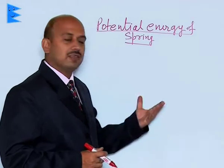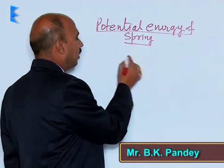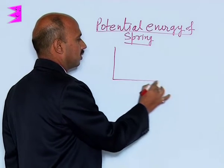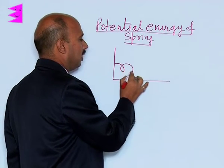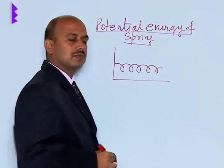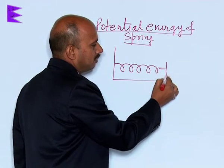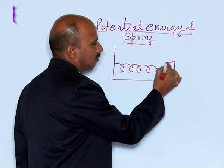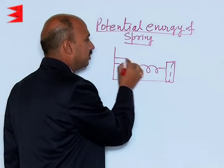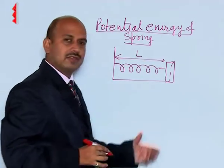Potential energy of spring. In this case, suppose you have taken a spring — this is actually an example of a helical spring. If you attach a mass here and the spring is placed at this point, it has got its natural length and there is no extension.